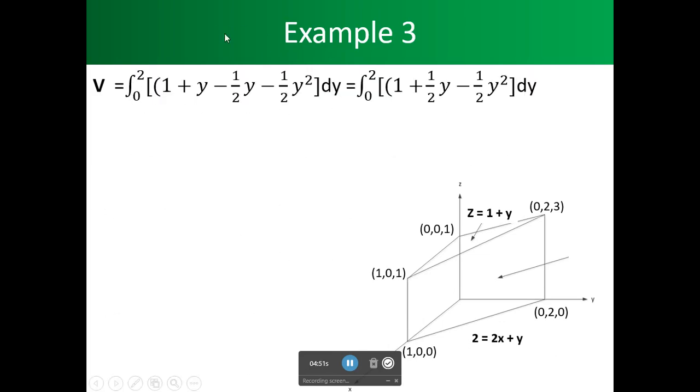So this is where we left off. And so now we're going to combine terms. And what we're going to get is 1 plus 1 half y minus 1 half y squared. And we're going from 0 to 2 for dy.